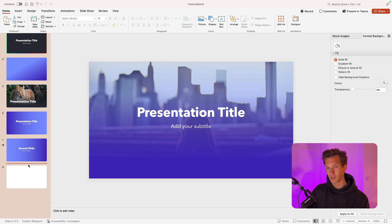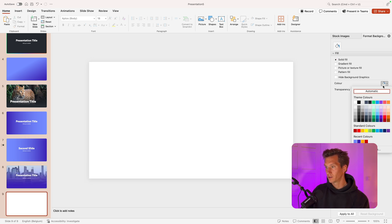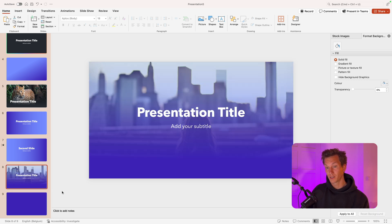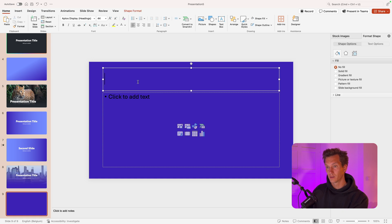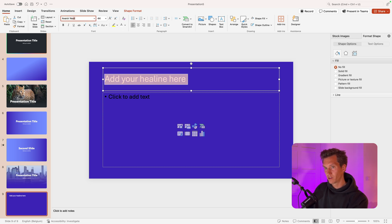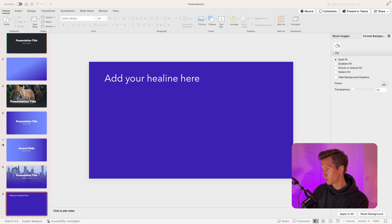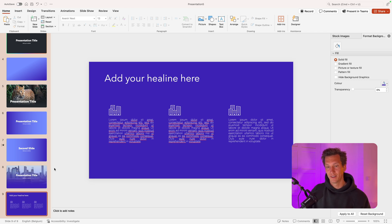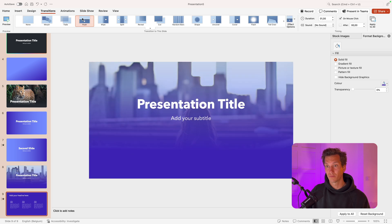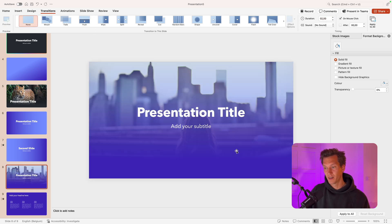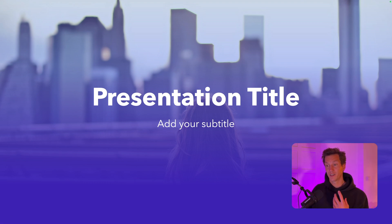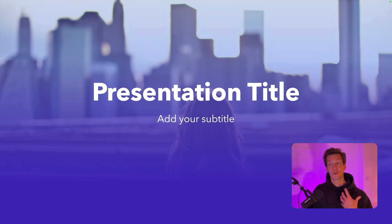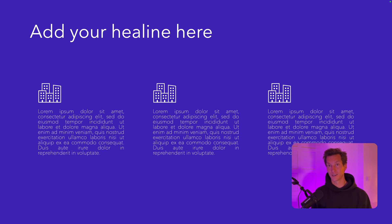Now add a new slide — drag it up. Make this one entirely solid fill with that dark color so the bottom of the first slide connects with the next slide. Change the layout and add a headline, make it white in Avenir Next. Add some body text and icons to get a professional feel. Add a push transition from the bottom to the next slide and increase the duration to two seconds. Previewing this, we can see a really nice opening slide with the presentation title and a subtle image in the background, the gradient on top semi-transparent, connected with an animation to a normal full-color slide.